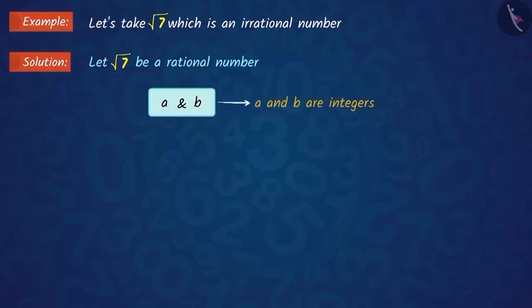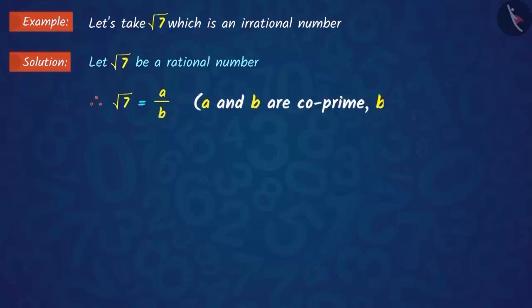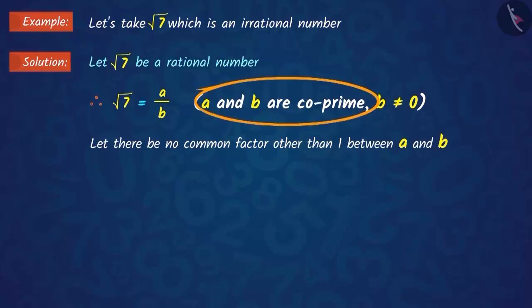Therefore, we can obtain two integers a and b such that the square root of 7 is equal to a upon b and b is not equal to 0. Suppose a and b do not have any common factor other than 1, where a and b are co-prime.